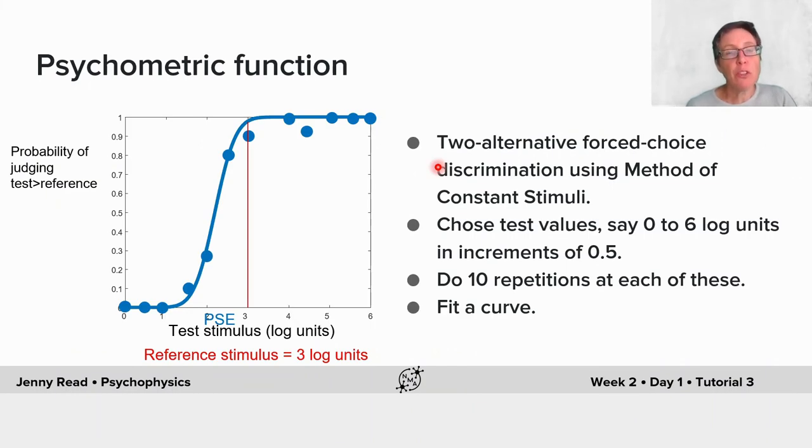The point I want to really make here is how you can measure this point of subjective equivalence. You could use the method of constant stimuli once again. You could choose some test values and you would keep the reference value fixed. Let's say I've got a reference stimulus that's fixed at three log units and I'm going to use various different values of the test stimulus.